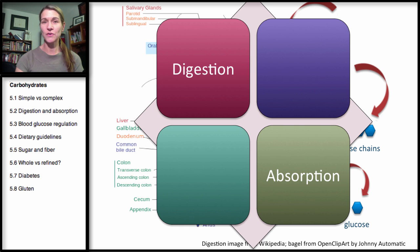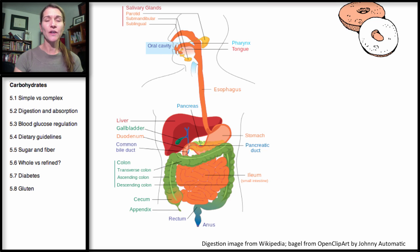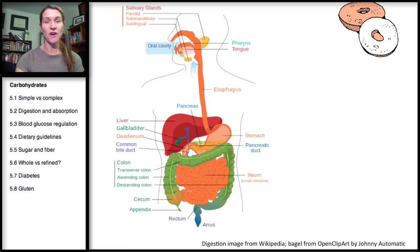Welcome to Section 2 of Carbohydrates on Digestion and Absorption. We're going to start by looking at what happens when we eat certain types of carbohydrates, starting with the example of a bagel. Bagels are highly refined and mostly starch, so they break down very quickly. Starch is essentially a string of sugar units or glucose units.